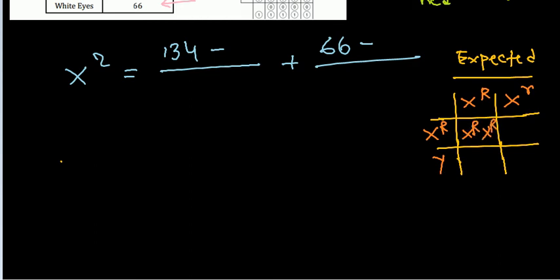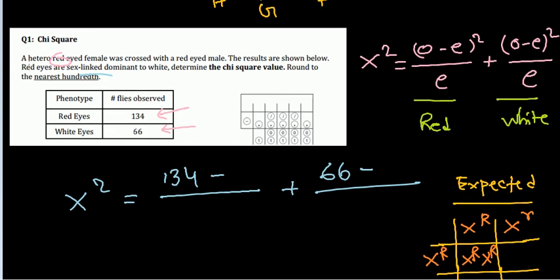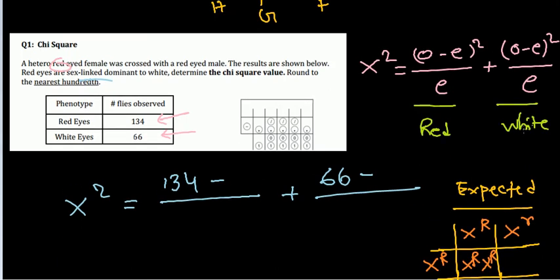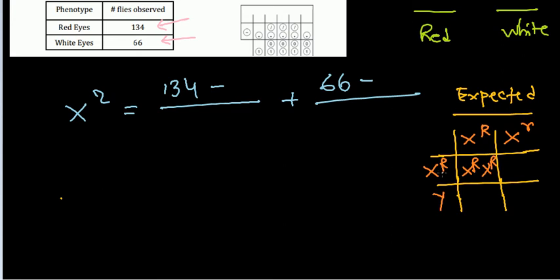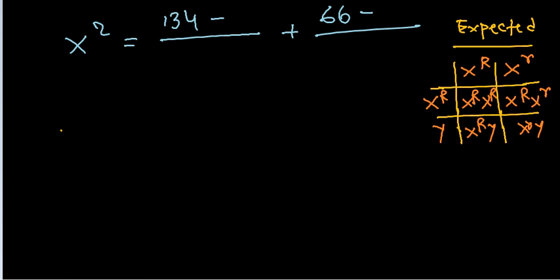What are the values here? X capital R, X capital R, and Y. You are taking this because a red-eyed female can be heterozygous, so one X can have the capital R. Red-eyed male means one X is present in the male and that will carry the gene capital R. So you are getting X capital R X small r, X capital R Y, X small r Y.